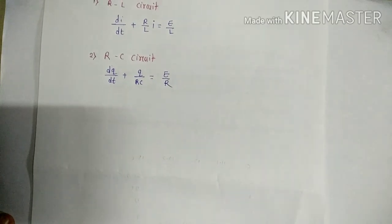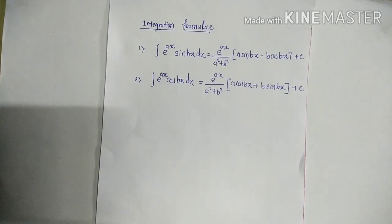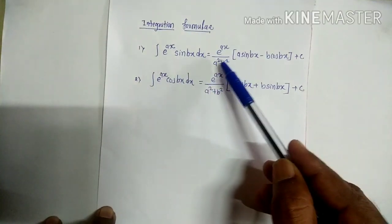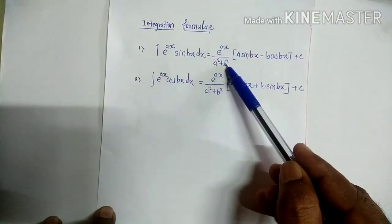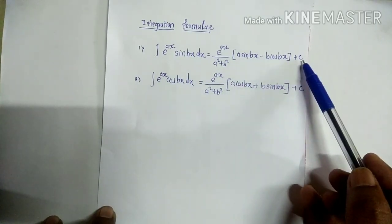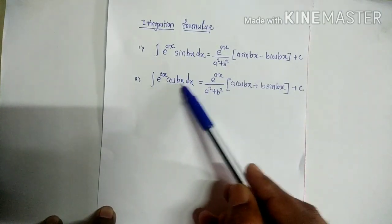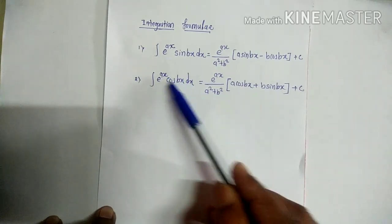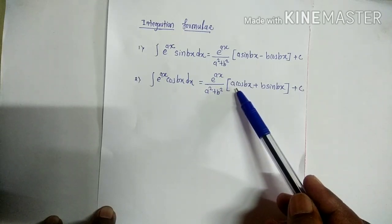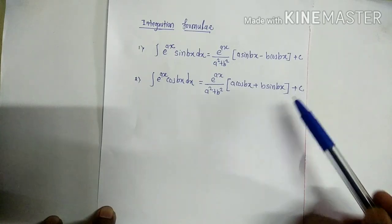To solve examples based on these electrical circuits, we need two integration formulas. First: the integral of e^(ax) · sin(bx) dx = e^(ax)/(a² + b²) · (a sin(bx) − b cos(bx)) + C. Second: the integral of e^(ax) · cos(bx) dx = e^(ax)/(a² + b²) · (a cos(bx) + b sin(bx)) + C, where A and B are constants.